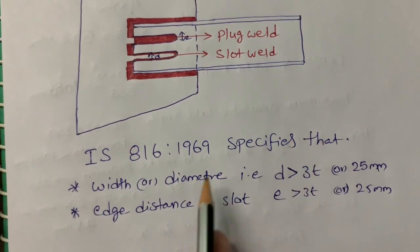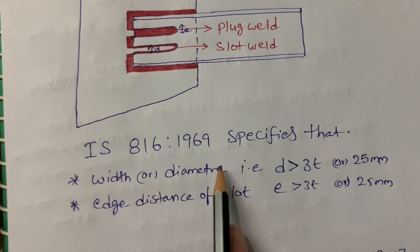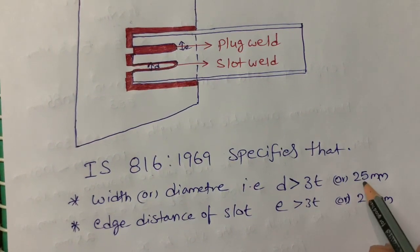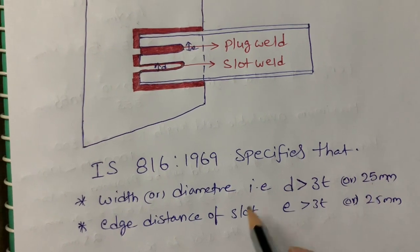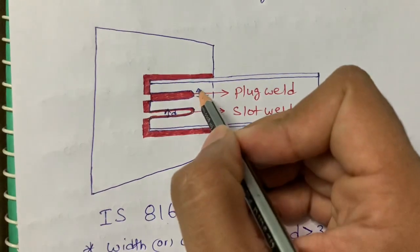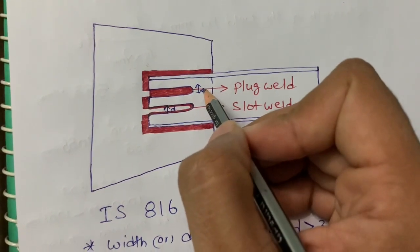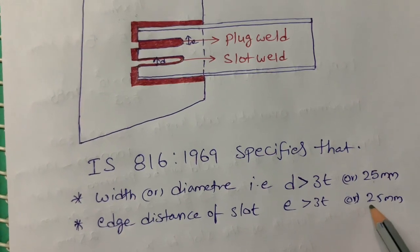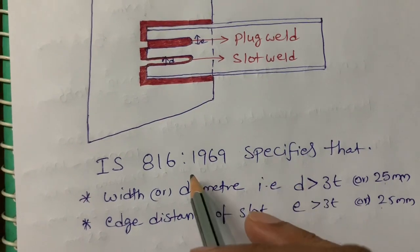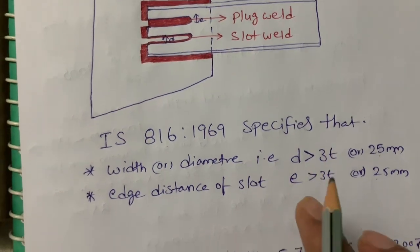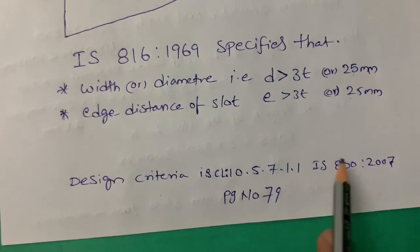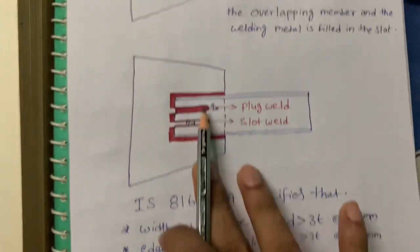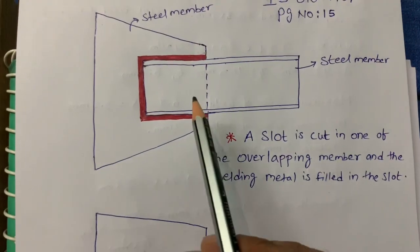IS 816:1969 specifies certain conditions: the width or diameter of this weld must be greater than three times the thickness of the plate or 25 mm, whichever is greater. The edge distance of the slot must also be greater than three times the thickness or 25 mm. The design criteria we follow as per IS 800:2007, clause 10.5.7.1.1, page number 79.